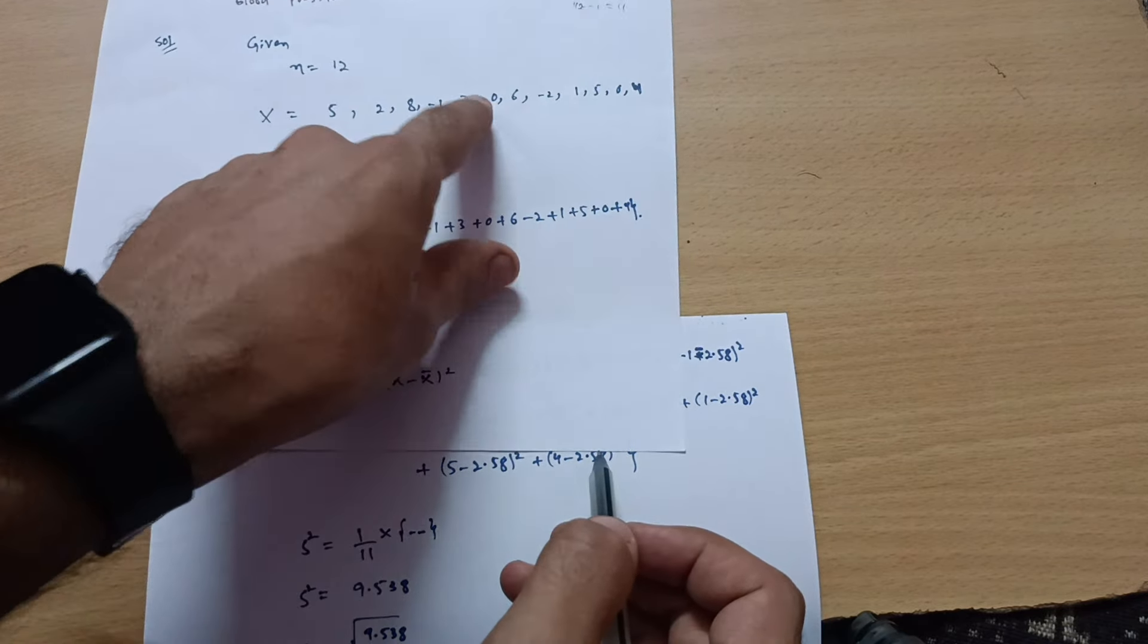So, there will be a slight difference in the calculation. Then S square is equal to 1 by 11 multiplied by this much. When you just calculate this much in the calculator, whatever the value you will get, multiply that value with this 1 by 11. You will get the overall value.